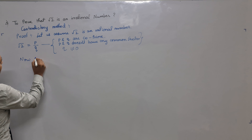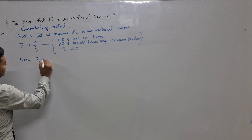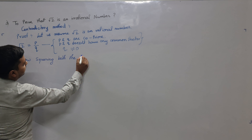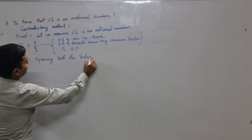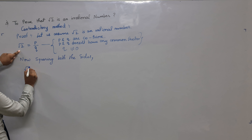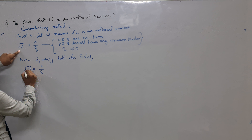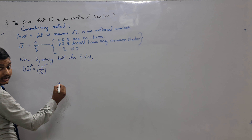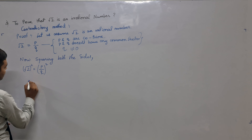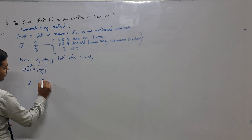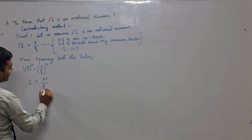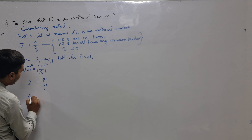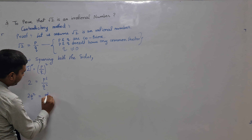Next, we are squaring both sides. After squaring, root 2 whole square equals p by q whole square, so we get 2 is equal to P square by Q square. Now transferring Q square to the left side, we get 2Q square is equal to P square.